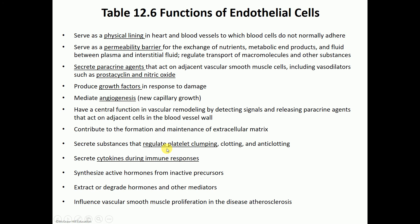Endothelial cells also regulate blood clotting. Platelets release serotonin, which leads to their accumulation and clumping, and that is prevented or regulated by substances released by the endothelial cells. The endothelial cells also release cytokines, which help in different immune responses. So the endothelial cells are not just a physical barrier between tissue and blood — they have many different functions.